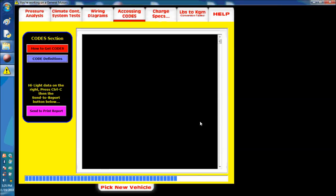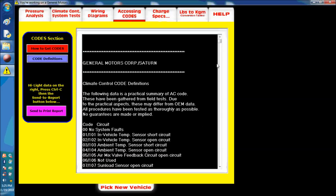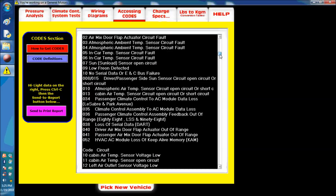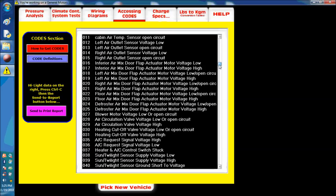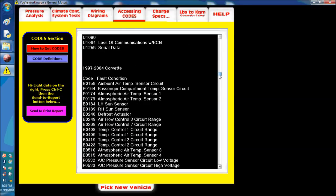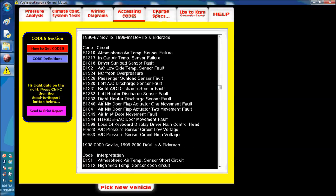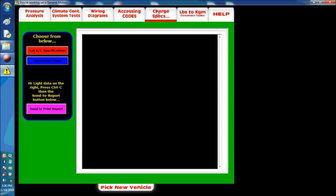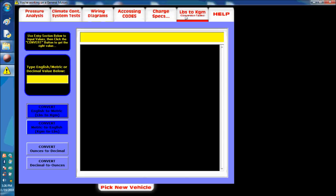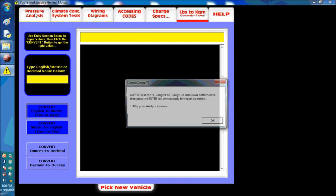It's got a pressure analysis section, which is the one that we're going to concentrate on. It's got a simple wiring diagram. It's got accessing codes. It's got pressure, like some kind of a table for the different pressures in case you get the pressures in metric systems and so on and so forth.